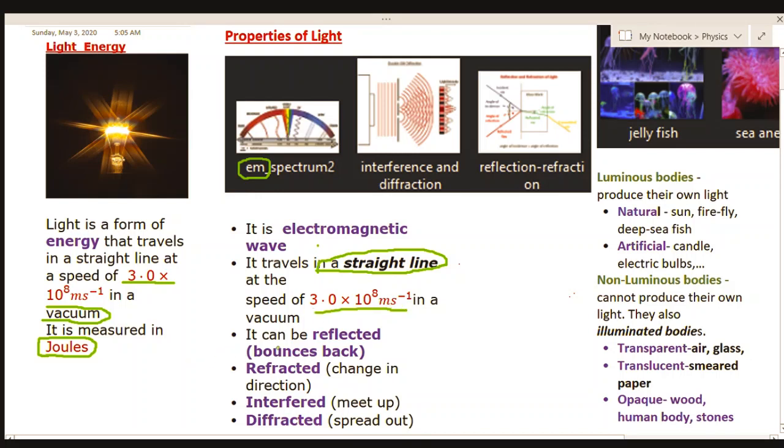Light can be reflected. By reflection, we mean that it is capable of bouncing back from a surface or from a reflecting surface. We can take this for a mirror. When light rays fall on this mirror, this is our incident ray. It bounces off from it, so we call this the reflected ray. This is an example of a reflecting surface—a mirror. This process is called reflection.